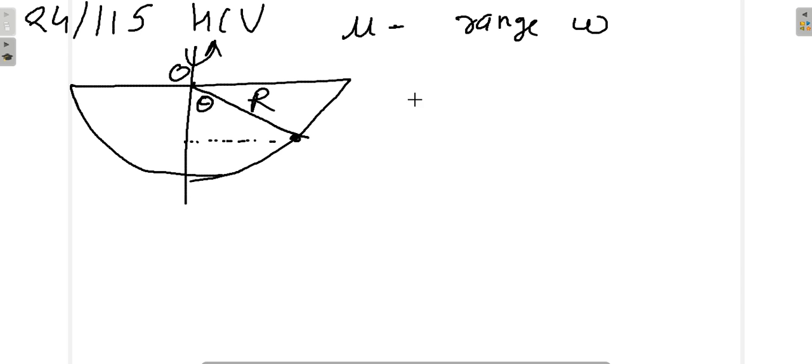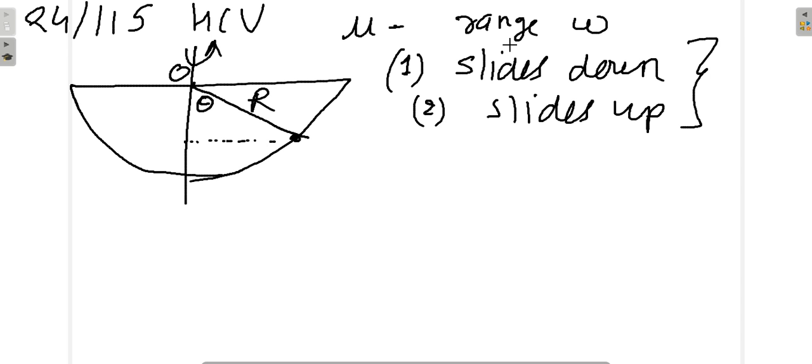So there are two possible situations. In situation number one, the block slides down. Situation number two is the block has a tendency to slide up. Using these two conditions, I will get the value for a range of omega. Now let us show all the possible forces on this particle. That is, let us draw the free body diagram of this particle.